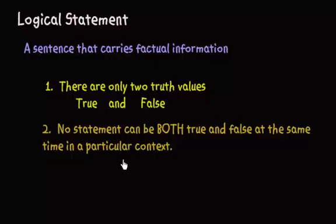But it can't be both, and it must have one. This goes back to the first assumption: there are only two truth values, true and false.